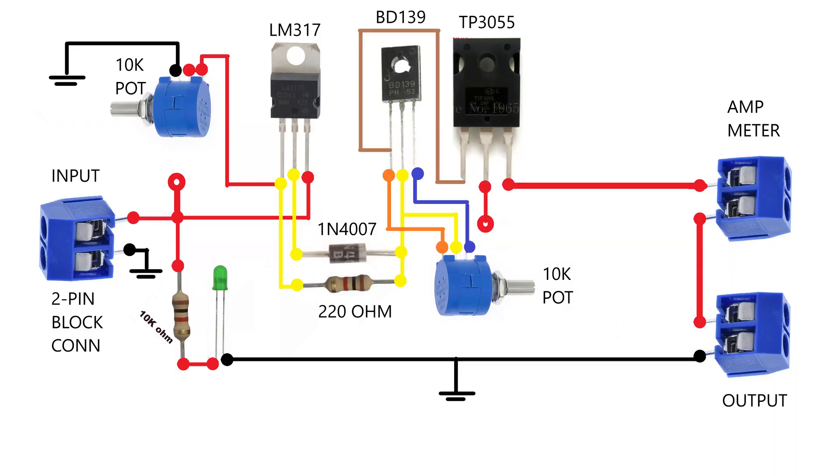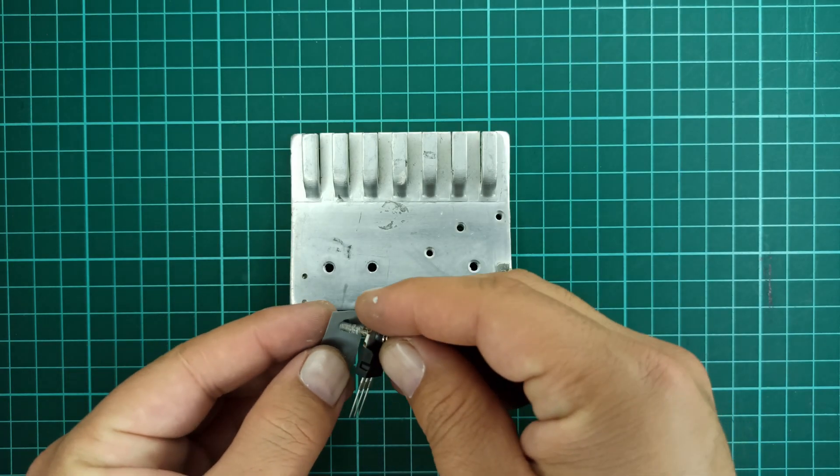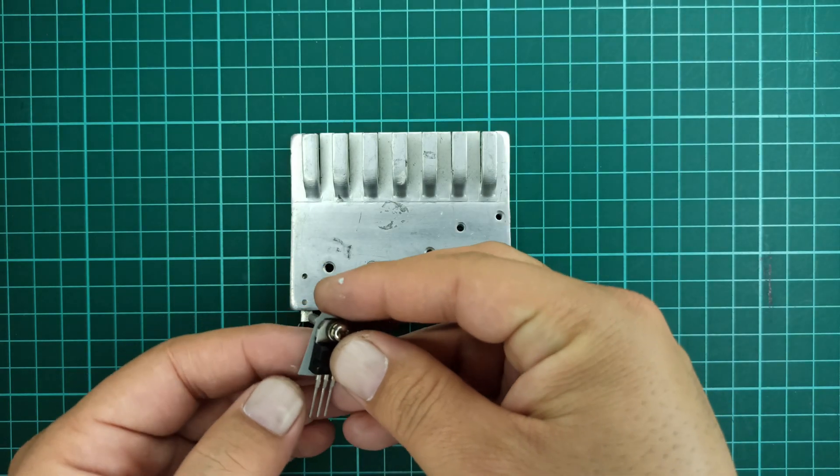The schematic diagram of this variable power supply is shown here and you can follow it to make it by yourself. Let's start designing this circuit by first taking a heat sink and attaching LM317, BD-139, and TP-3055 to it.